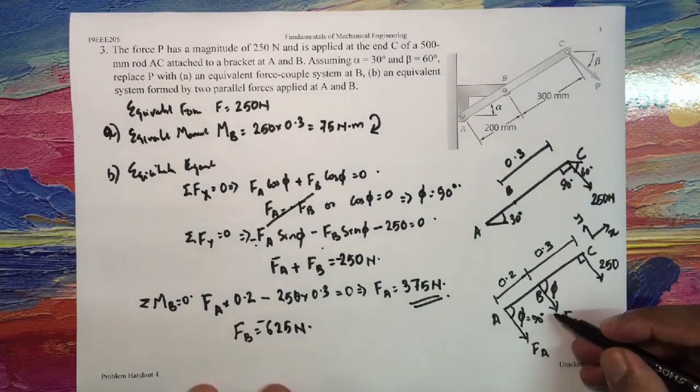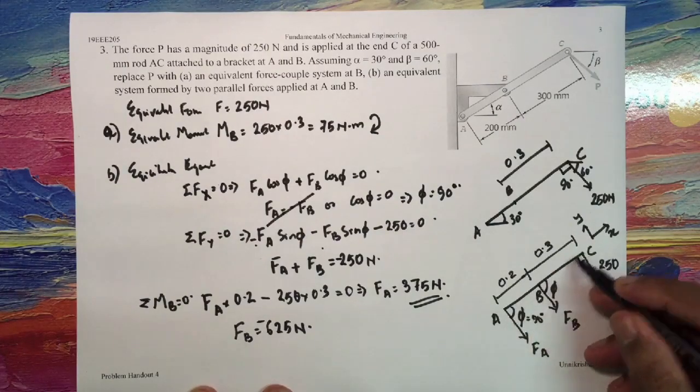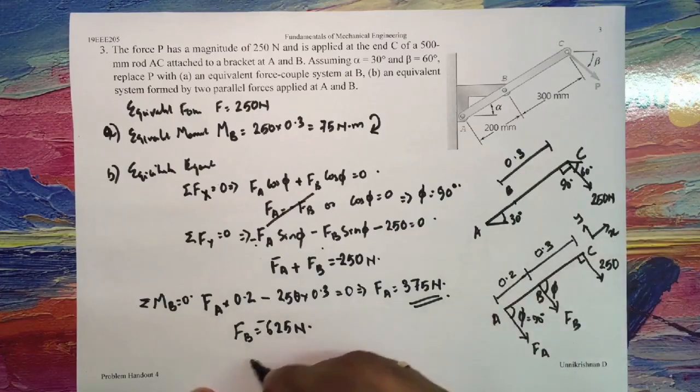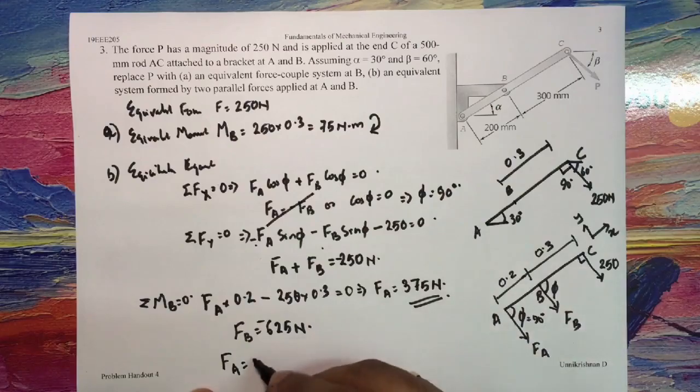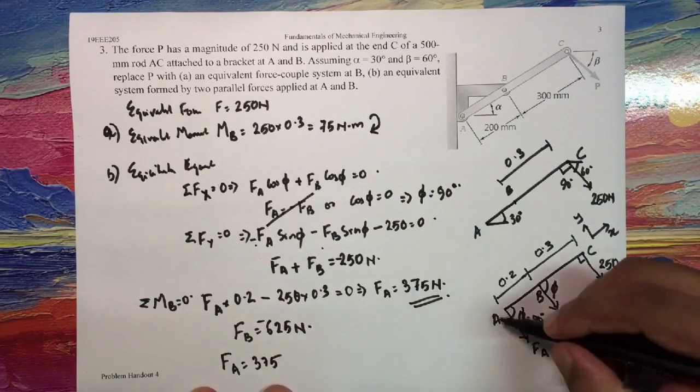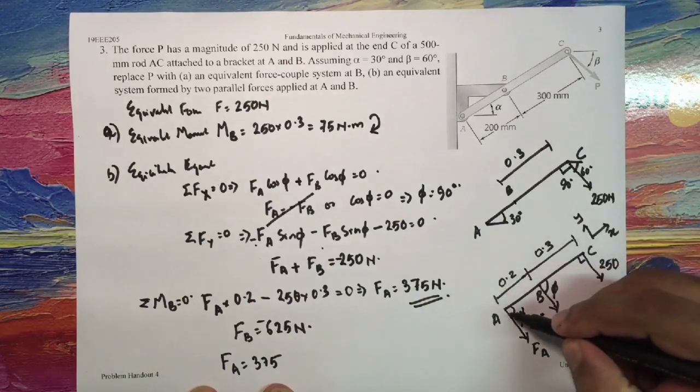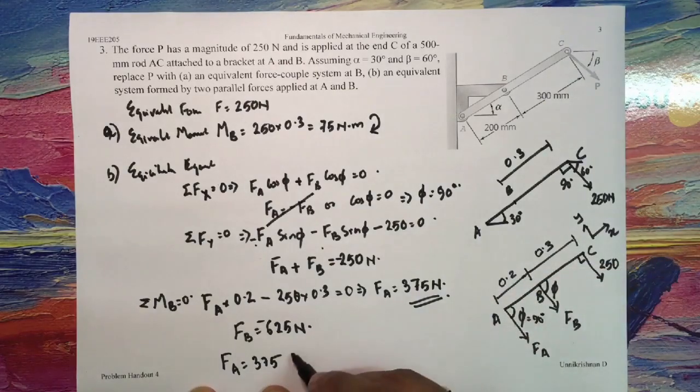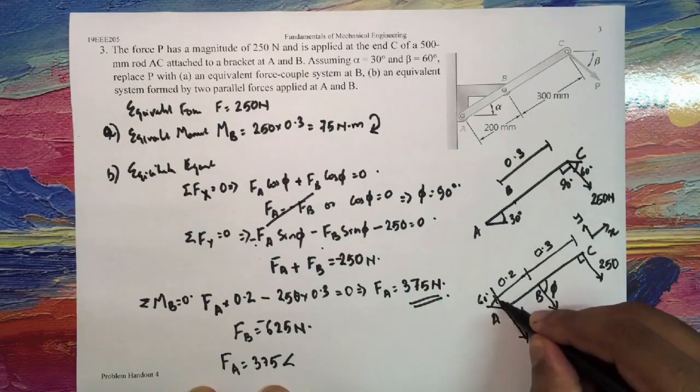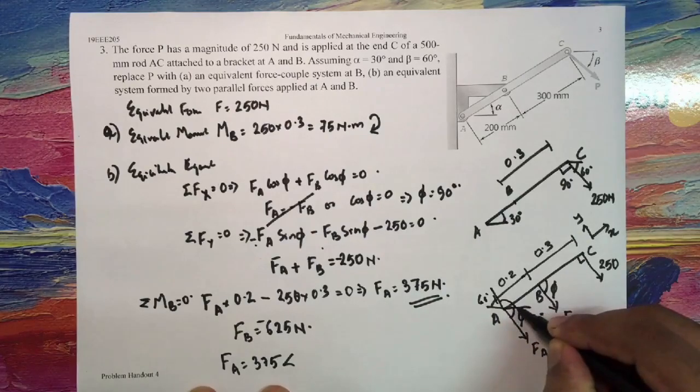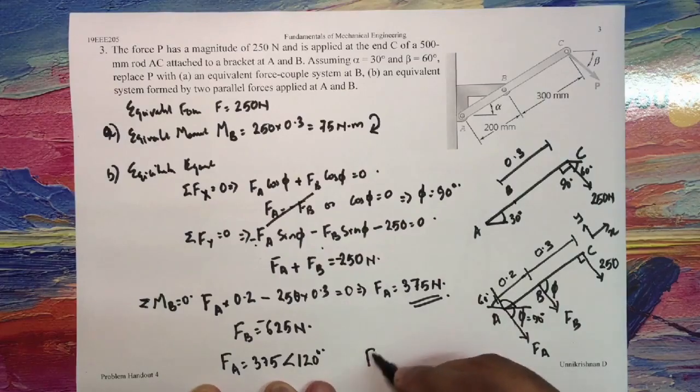So now coming to the angles, it will be acting at 90 degrees with respect to the lever, that is lever AC. So I have my final answer as FA is equal to 375 Newtons, and 375 Newtons I have got it as in the positive Y direction. So 375 Newtons acting at an angle of, this angle being 60, so the remaining with respect to positive X would be 120 degrees.